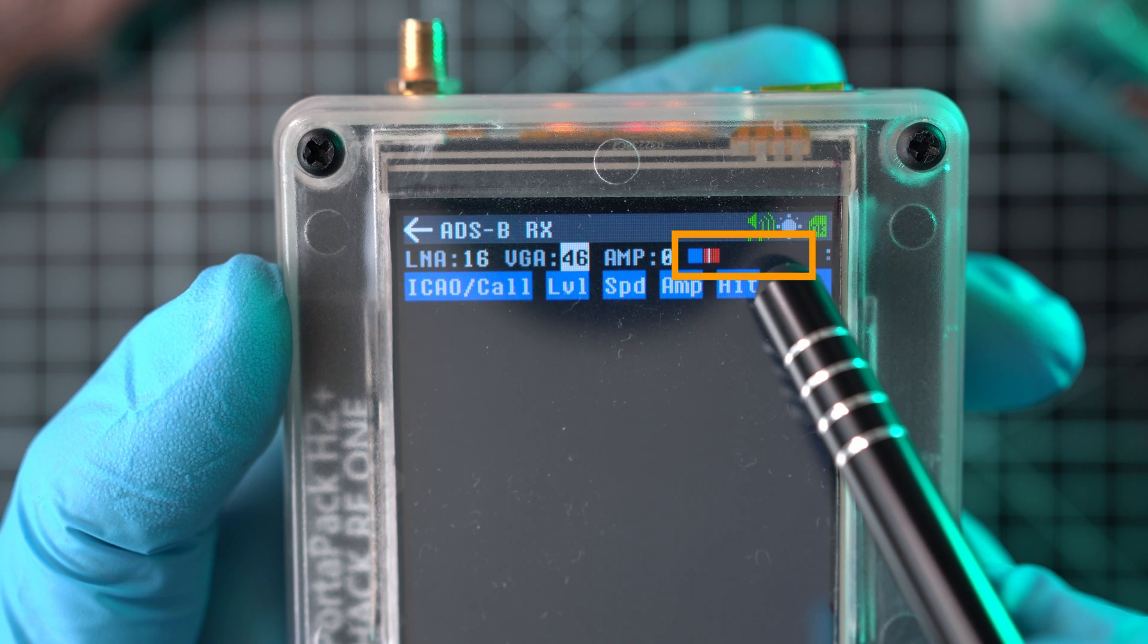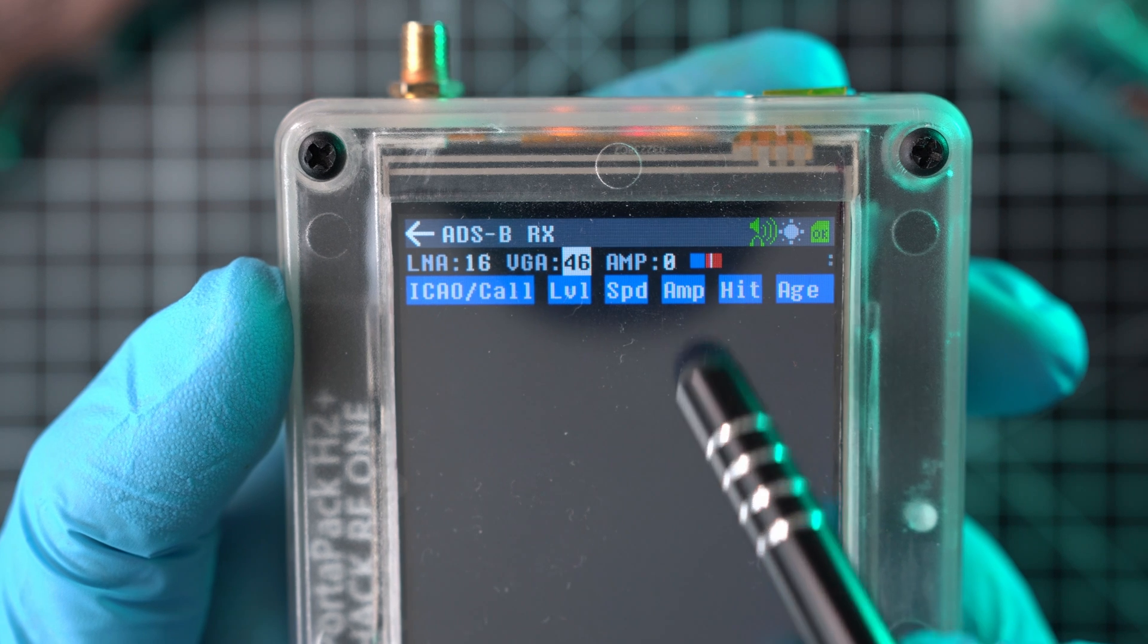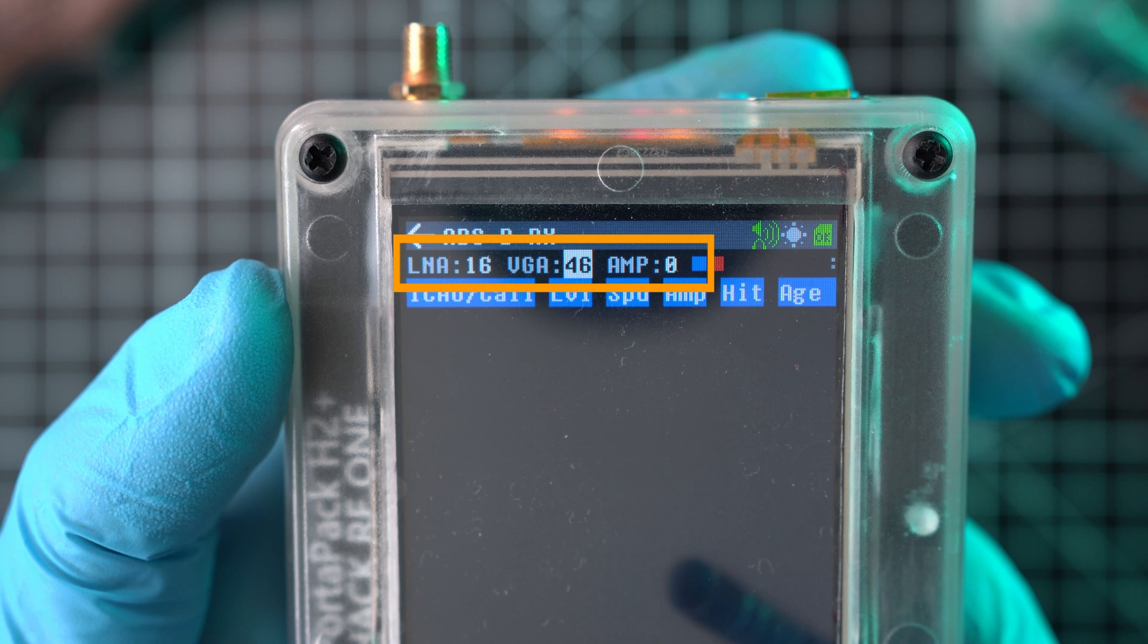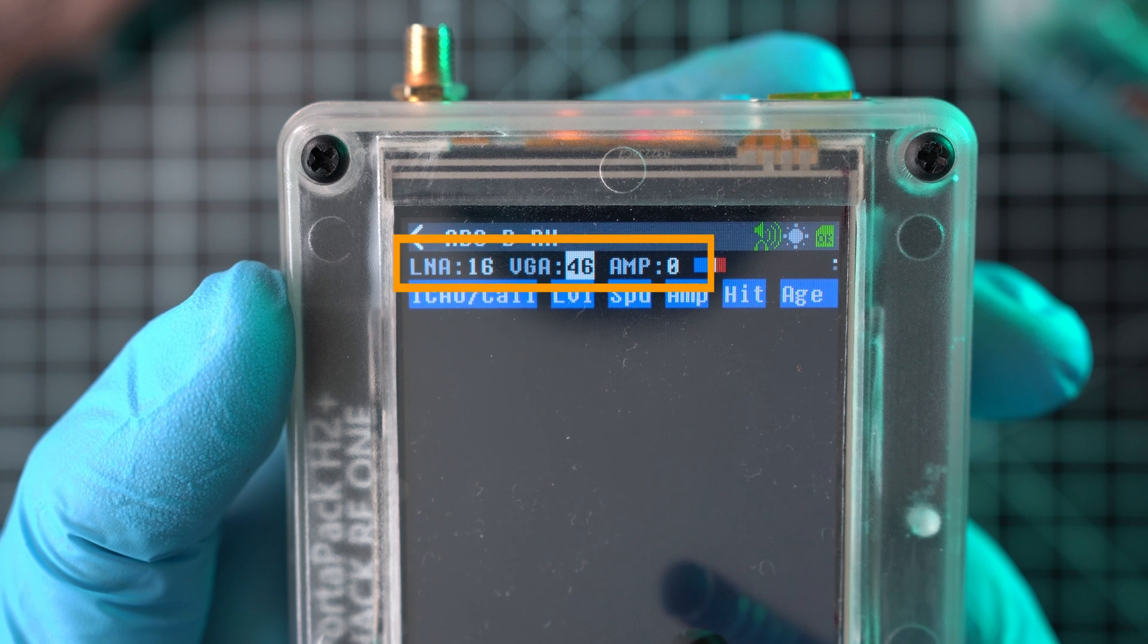Next is Signal Strength, showed by horizontal bar. These settings will affect what or if you receive any signal. Play around with different values until you get hits.